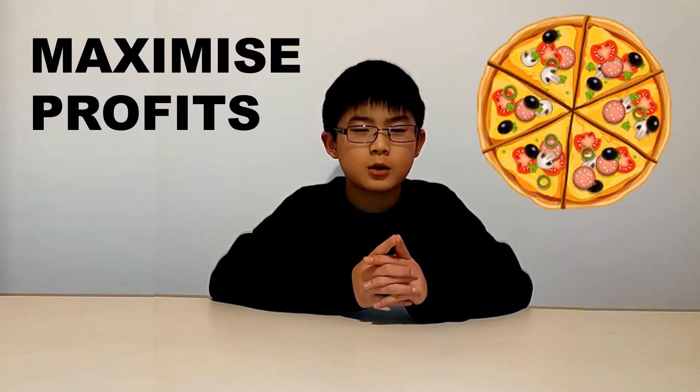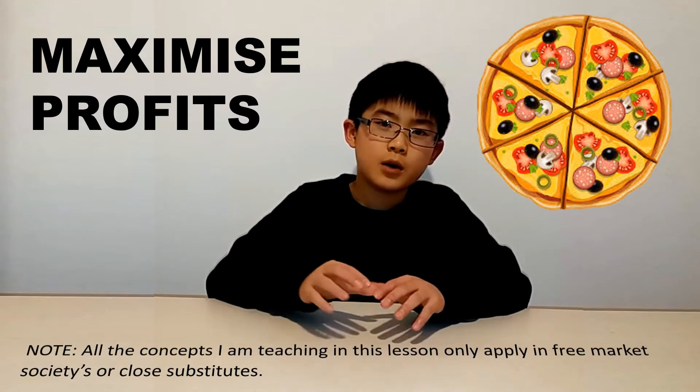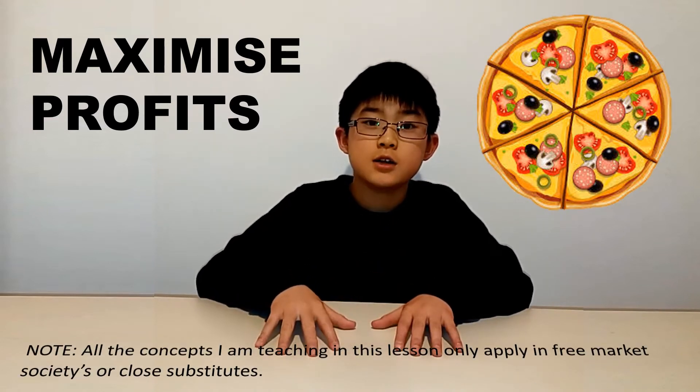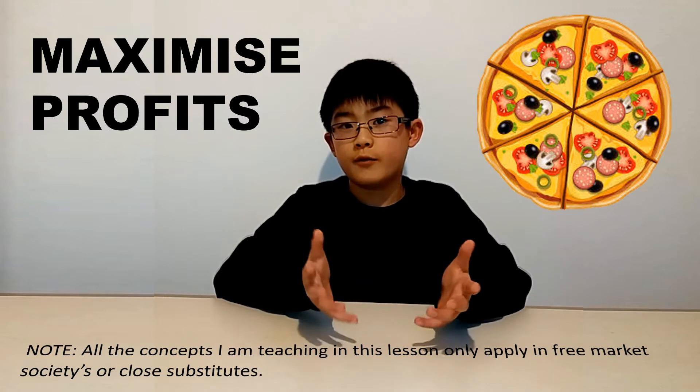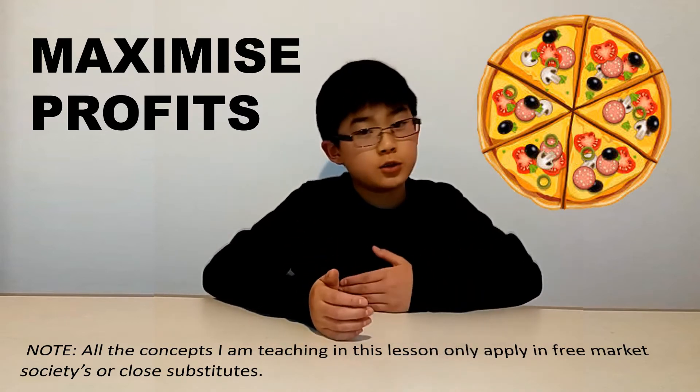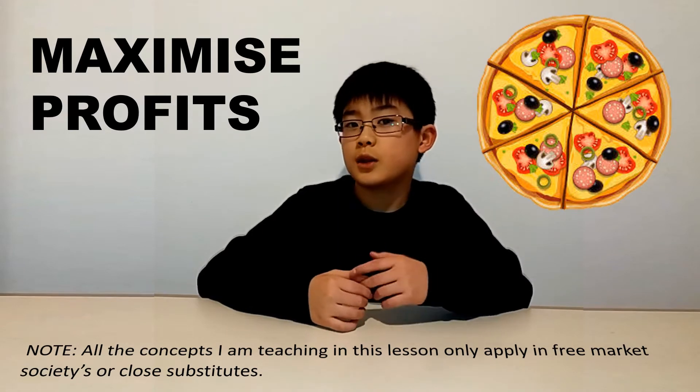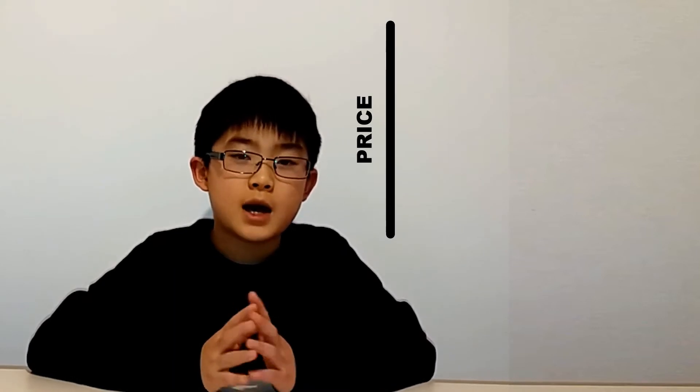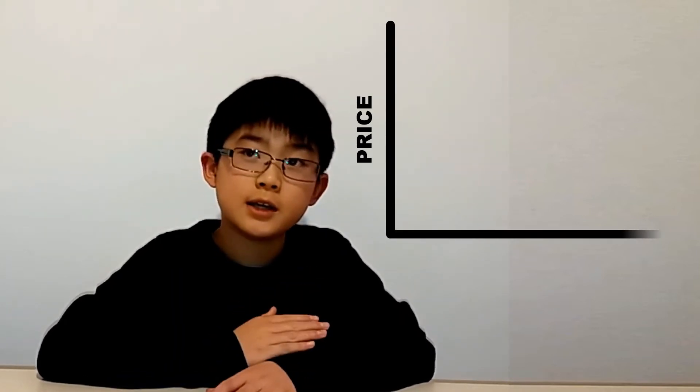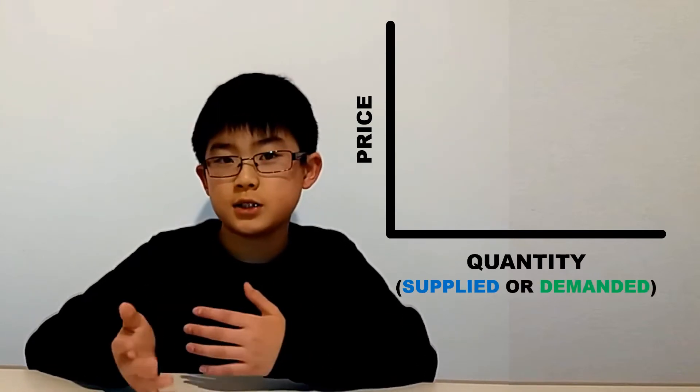Let's see how this works in an example of pizza. But before we go ahead with this Supply and Demand graph, just bear in mind that the concepts I teach only remain true in a free market situation where there are voluntary transactions. Basically where a buyer can choose what they want to buy and sellers can choose what they want to sell. For a Supply and Demand graph, the y-axis is always the price of the goods, and the x-axis is always the quantity, either quantity supplied or quantity demanded, depending on which line you're looking at.